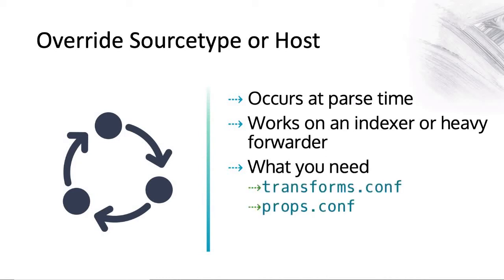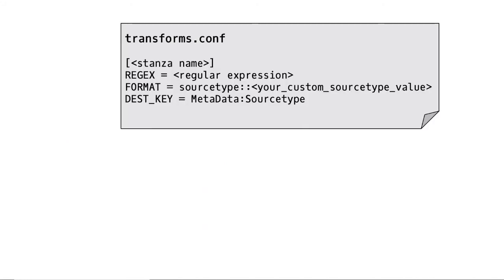Majorly, transforms.conf and props.conf are the two very important configuration files you'll be defining for this. Looking at transforms.conf from the stanza perspective: you define the stanza name, the regular expression in square brackets, the format, and the test_key. For the test_key, you need to specify the metadata source type value.